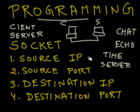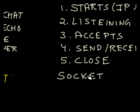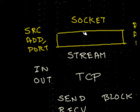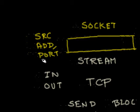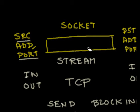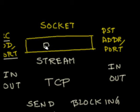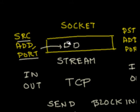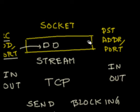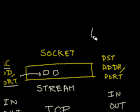The Socket class is the main class for socket programming. A socket is basically defined by a source IP address and port number, and a destination IP address and port number — because two machines are communicating. Each packet has a source IP address, a source port, a destination IP address, and a destination port.